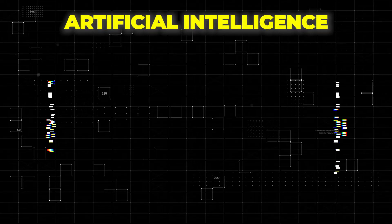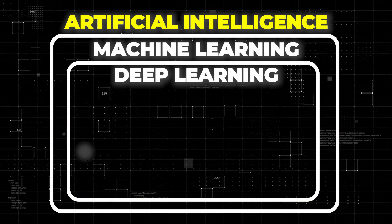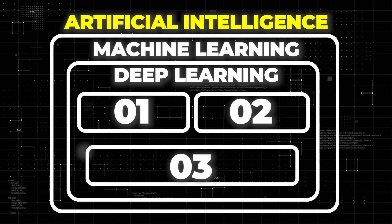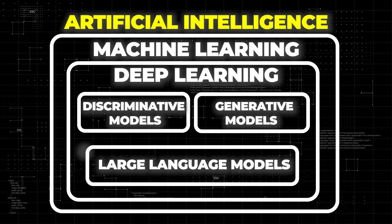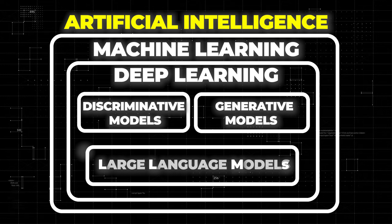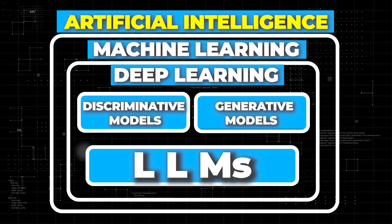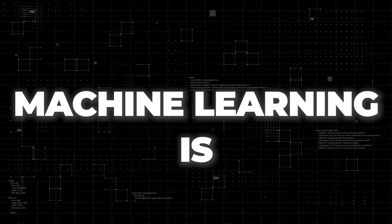In AI, there's what is called machine learning. Within machine learning, there is another called deep learning. Deep learning can further be divided into three: discriminative models, generative models, and large language models, also known as LLMs. Now, to understand the overall definition of AI, let's look at what machine learning is.